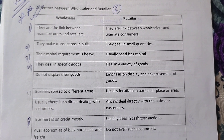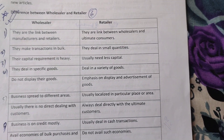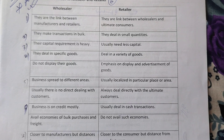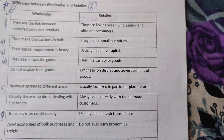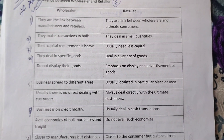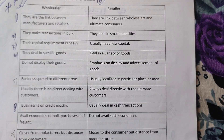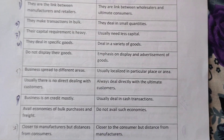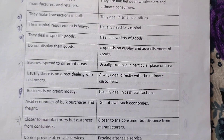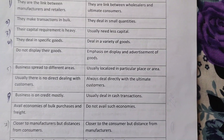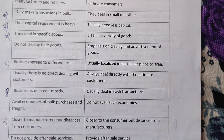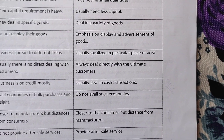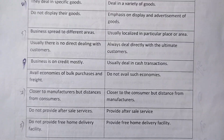Wholesalers are the link between manufacturers and retailers, whereas retailers are the link between wholesalers and ultimate customers. Wholesalers make transactions in bulk, while retailers deal in small quantities. Wholesalers have heavy capital requirements, while retailers usually need less capital. Wholesalers deal in specific goods, whereas retailers deal in a variety of goods. Wholesalers do not display their goods, while retailers emphasize display and advertisement.